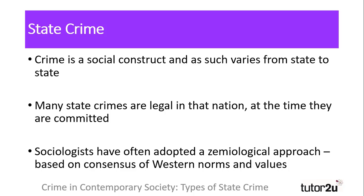Crime is a social construct. As such, what is defined as a crime changes from one nation to another, which often makes it difficult to determine whether a state has committed a crime against its people. As the state makes the law, they have the power to define what is and what isn't a crime at the time it is committed. This has led many sociologists to adopt a zemeological approach to state crimes, focusing on the harm that is caused rather than the legality of the actions.